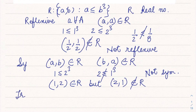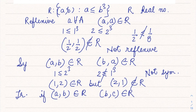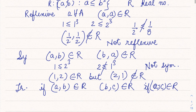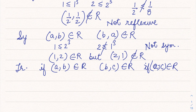Let's check transitive. The transitive condition is: if (a, b) belongs to the relation and (b, c) also belongs to the relation, then if (a, c) is also a part of the relation, we call it transitive. Let's take some examples — suppose a = 1, b = 2, c = 3. So 1 ≤ 8, 2 ≤ 27, and 1 ≤ 27. So in this case that is correct.